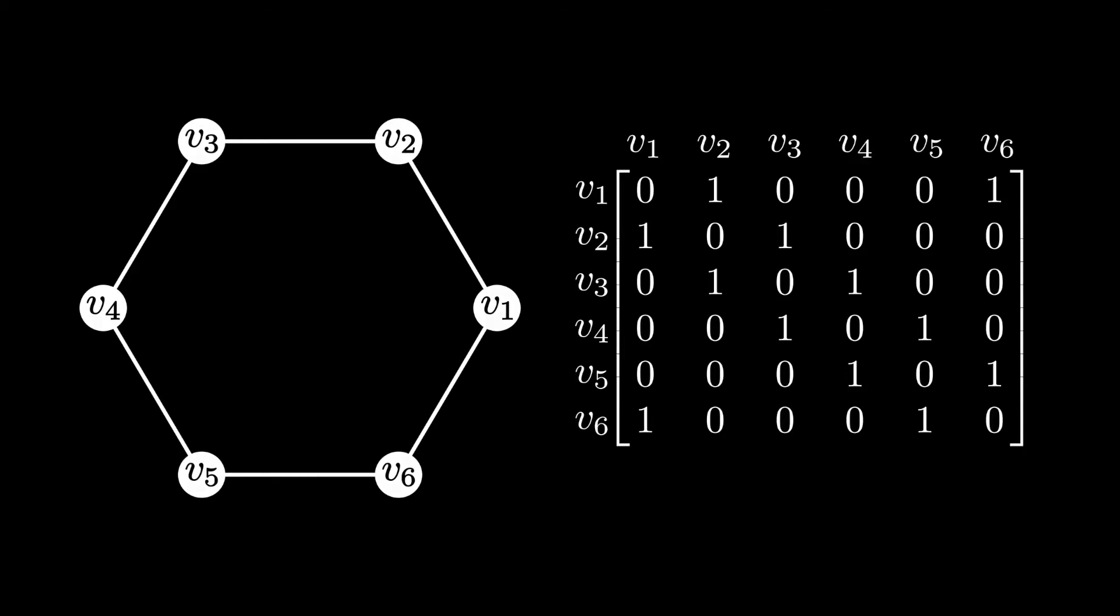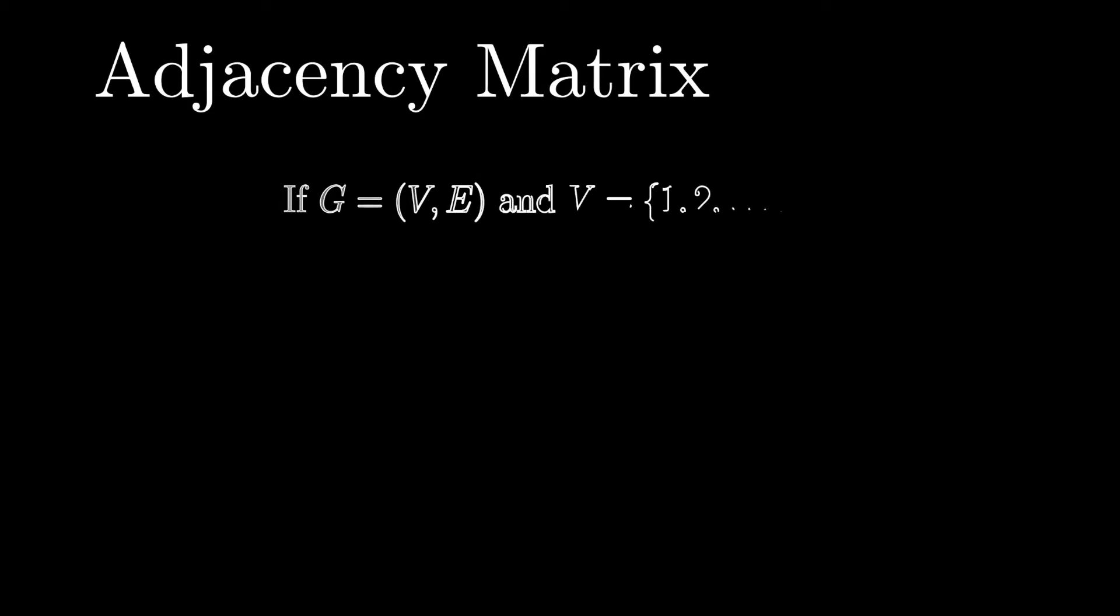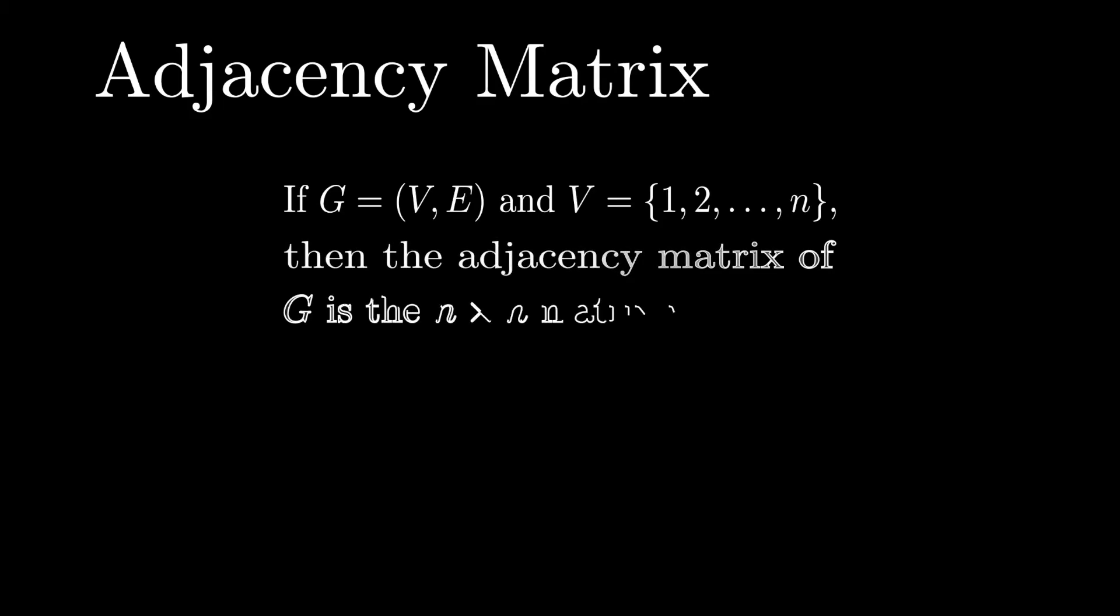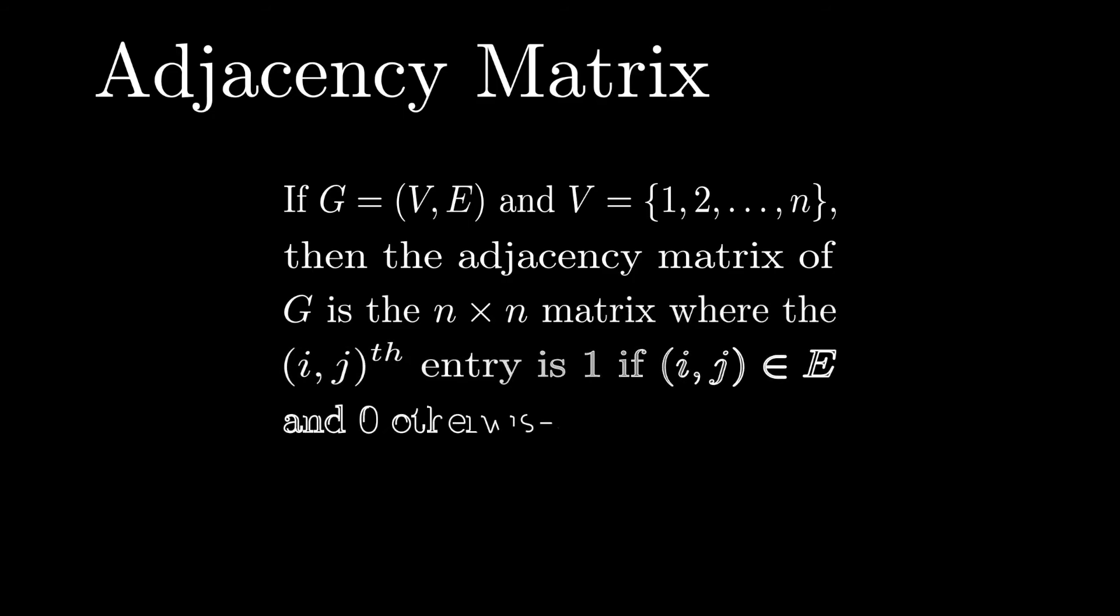Now that we have a good idea of how to construct the adjacency matrix, I'm going to give you the rigorous definition. If g is a graph and v is specifically the vertex set, which is the integers 1 through n, then the adjacency matrix of g is the n by n matrix where the ijth entry is 1 if the tuple ij is an element of the edge set, and it is 0 otherwise.